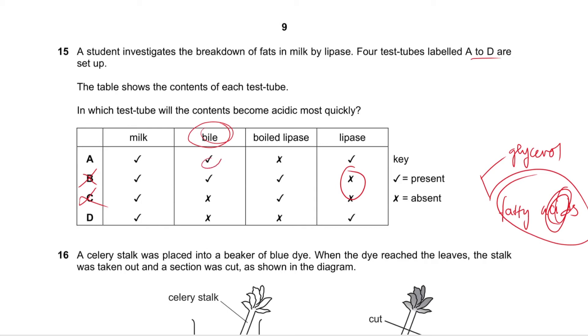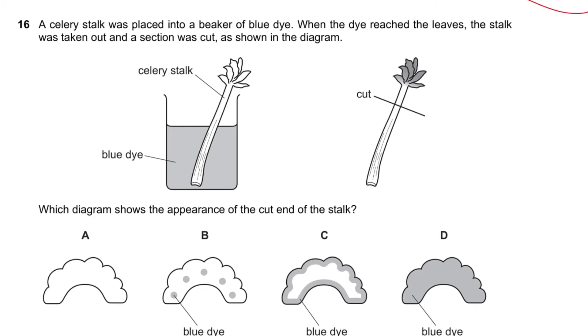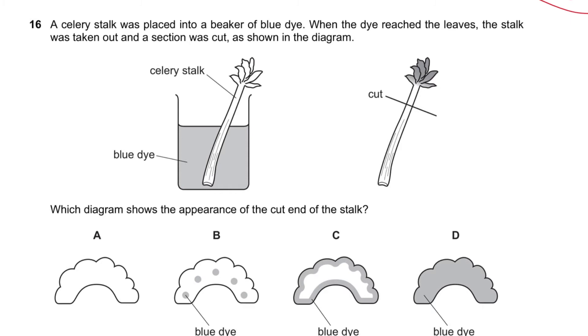Question number 16 says a celery stalk was placed into a beaker of blue dye. When the dye reached the leaves, the stalk was taken out and a section was cut as shown in the diagram. Which diagram shows the appearance? So it's going to be in the xylem. The xylem is obviously not like the whole thing. Answer is B, the xylem is always in circular bundles or vascular bundles.